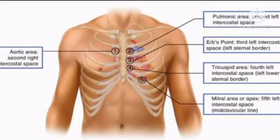The first is the aortic area in the second right intercostal space. The second is the pulmonic area in the second left intercostal space. Third is Erb's point in the third left intercostal space. Fourth is the tricuspid area in the fourth left intercostal space. Fifth is the mitral area or apex in the fifth left intercostal space.